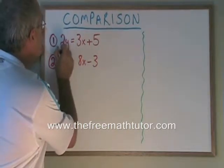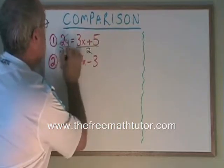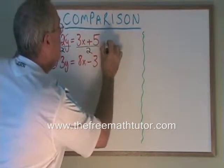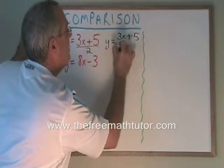If I divide both sides of this equation by 2, I get these cancel and I get y equals 3x plus 5 over 2.